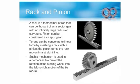A rack and pinion comprises a circular gear engaging with a linear gear, which operates to translate rotational motion into linear motion. A rack and pinion drive can use both straight and helical gears. These are used in stair lifts and the steering mechanisms of cars and steered vehicles.